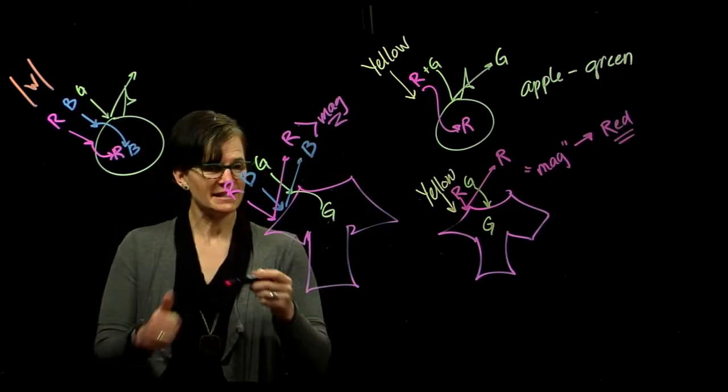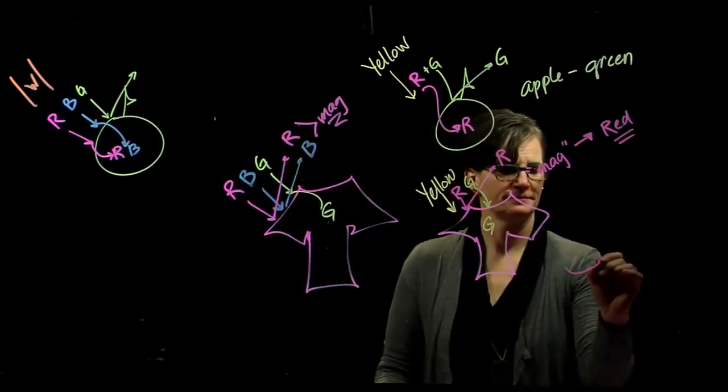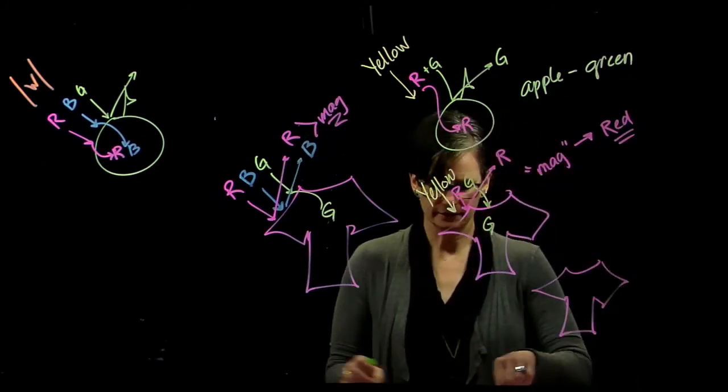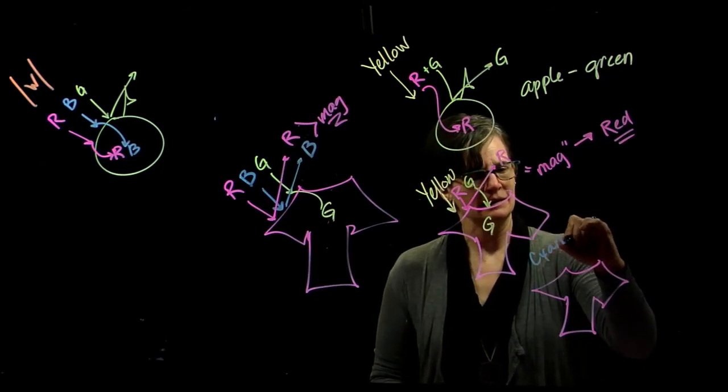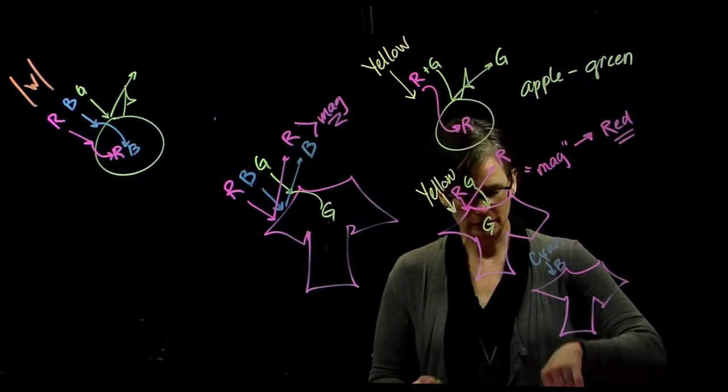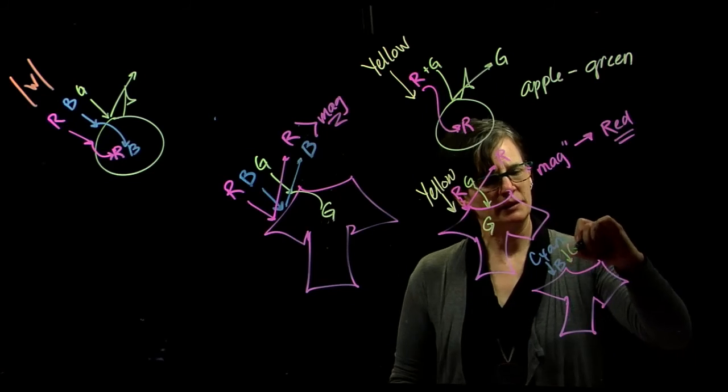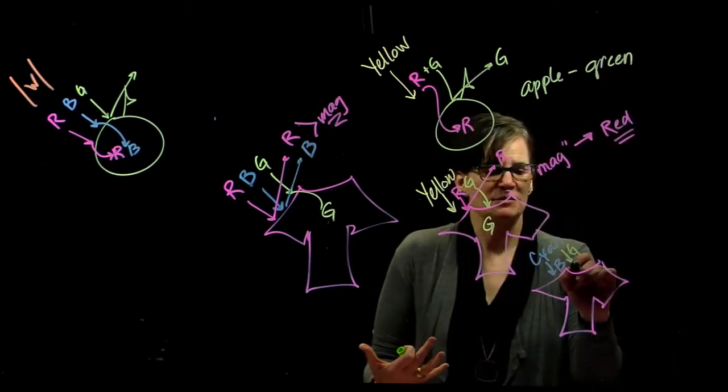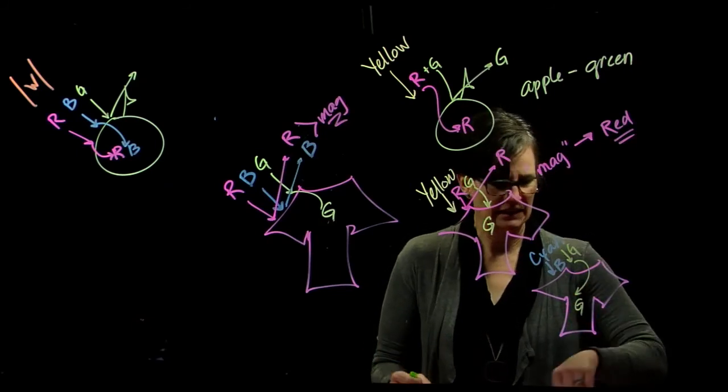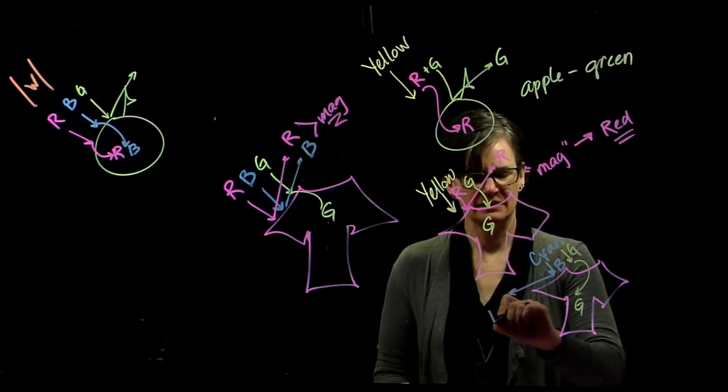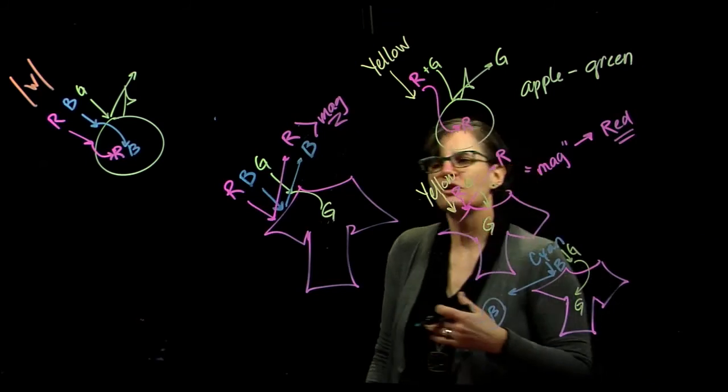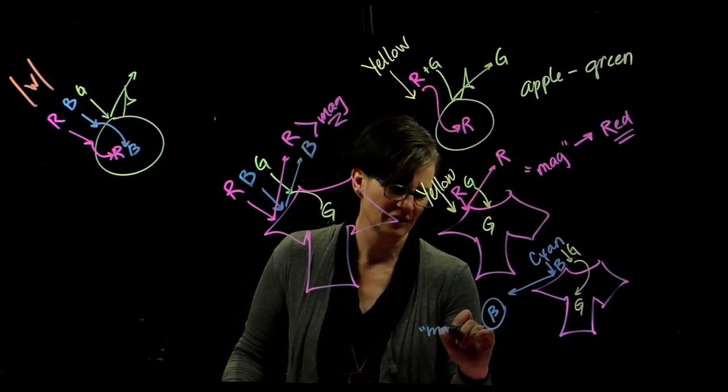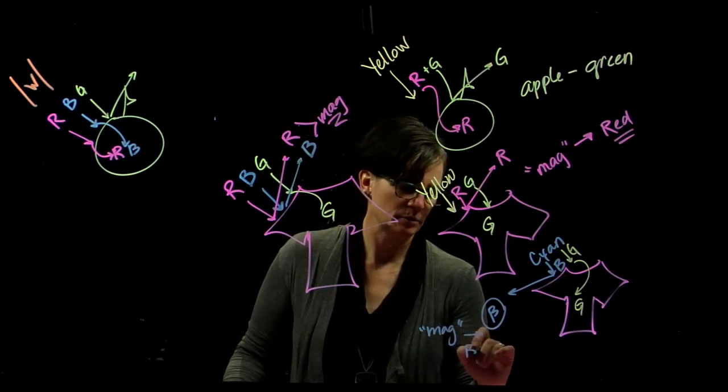So, what if I present it with cyan light? Well, cyan light we know is made up of blue and green. Magenta again absorbs the green light, reflects the blue light. So the blue light that is presented to it is reflected, and we view this magenta shirt as blue.